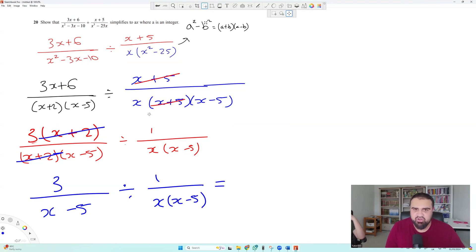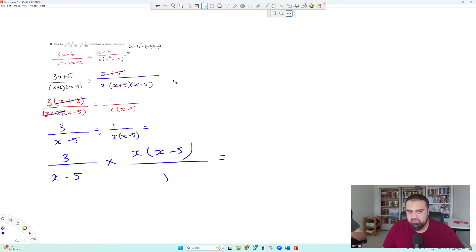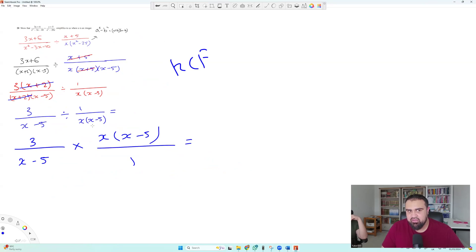Keep change flip. Yes, exactly. You would do keep change flip. So it's 3 over x minus 5 times x and then x minus 5 over 1. And we see where this is going to go, right? So keep change flip. We've got 3x multiplied by x minus 5 over x minus 5. And that is just satisfying at this point, isn't it? Cancels out and the answer is just 3x.